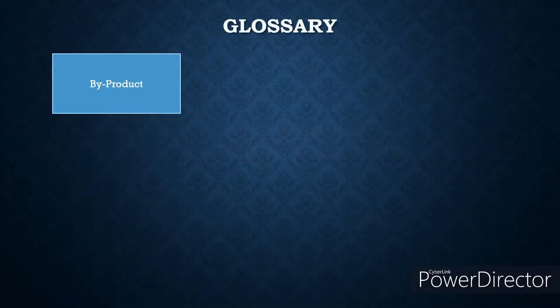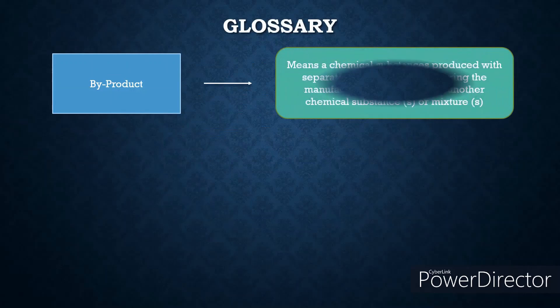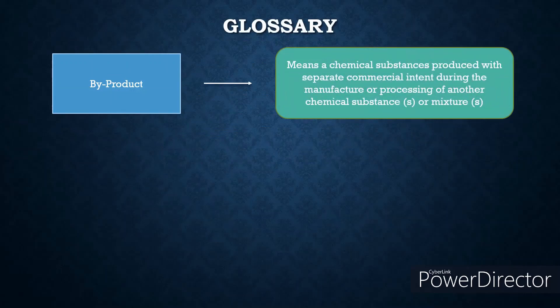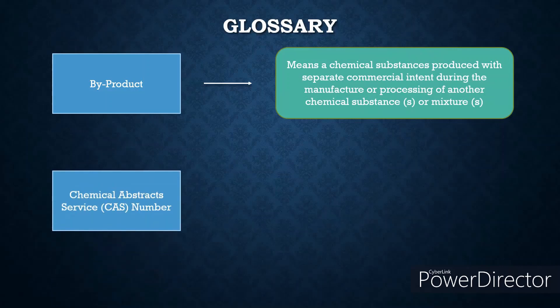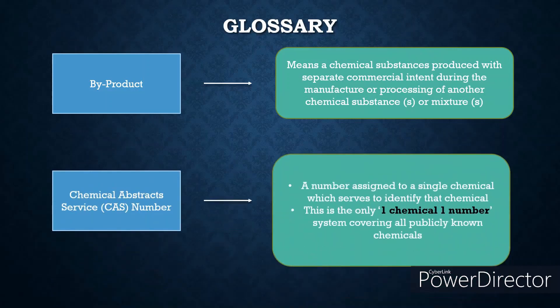Byproduct: a chemical substance produced with separate commercial intent during the manufacture or processing of another chemical substance or mixture. Chemical Abstract Service number, or CAS, is a number assigned to a single chemical which serves to identify that chemical. This is the only one-chemical-one-number system covering all publicly known chemicals.